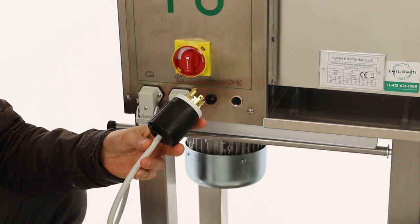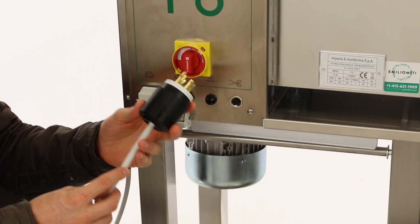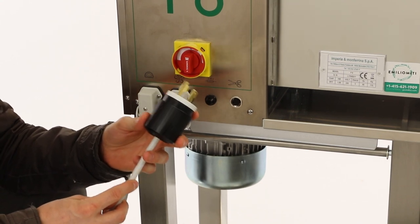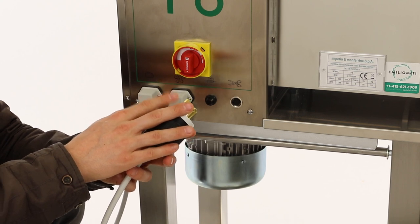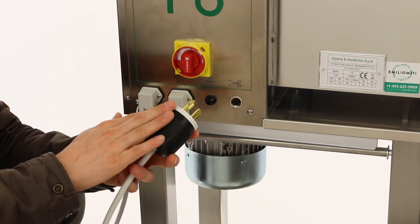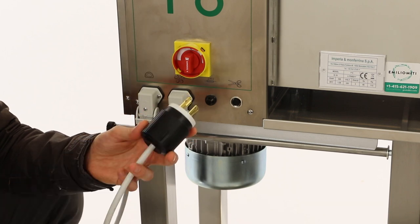The P6 ships without a plug, so make sure to contact a local electrician to have a plug installed on the machine that matches your wall outlet. The P6 is 220 volts and will operate on 208 to 240, three phase.